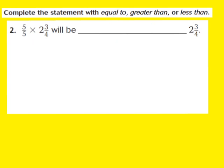What I notice is that I have the fraction 5 fifths, and I'm multiplying that by the mixed number 2 and 3 fourths. I need to pay careful attention to my fraction — the numerator is the same as my denominator. When the numerator and denominator are the same, the fraction 5 fifths becomes the whole number 1. So I'm going to rewrite my problem and turn 5 fifths into 1, giving us 1 times 2 and 3 fourths.